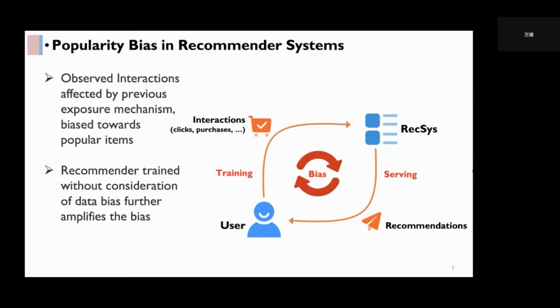During this process, different items get different exposure probabilities. In most cases, popular items are more likely to be recommended to users. Under this biased exposure mechanism, the user behaviors would also bias towards popular items.